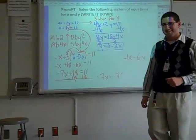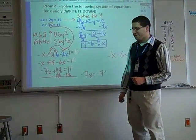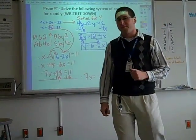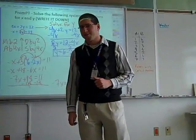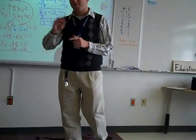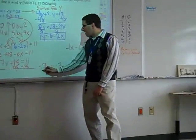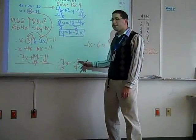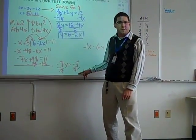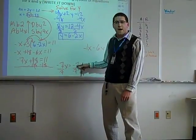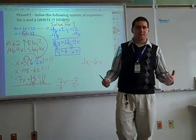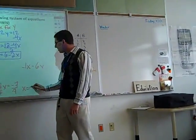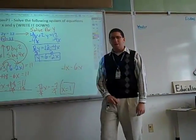Because negative 7 times 1 equals negative 7, because negative times a positive equals negative. If you divide both sides by negative 7, the top and bottom are the same. When the top and bottom are the same, x is 1.